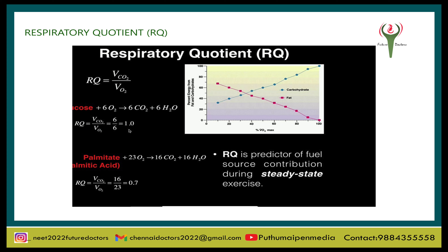When carbohydrates are used as substrate and are completely oxidized, the RQ is always 1, because the amount of CO₂ evolved is always equal to the amount of O₂ consumed: C₆H₁₂O₆ + 6O₂ → 6CO₂ + 6H₂O + energy, so RQ = 6CO₂ / 6O₂ = 1. If the respiratory substrate is fat, the RQ will be less than 1, because the volume of CO₂ evolved is less than the volume of O₂ consumed.